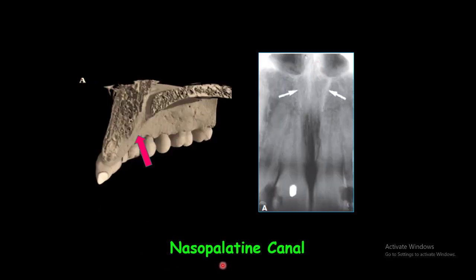The nasopalatine canal. The nasopalatine canal originates in the anterior floor of the nasal cavity and exits on the anterior part of the maxilla as the incisive foramen. On intraoral radiographs, the nasopalatine canals are seen as a pair of radiopaque lines running vertically from the floor of the nasal aperture to the incisive foramen.